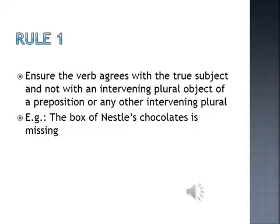Let's take up the subject: 'The box of Nestle chocolates.' The helping verb 'is' — where should it be, 'is' or 'are'? You will be confused. Chocolates is plural, then why 'is'? Because the true subject is 'box,' not 'chocolates.' So: 'The box of Nestle chocolates is missing.' Is it a correct sentence? Yes, it's a correct sentence. You have to find out the true subject. Subject-verb agreement is very important.